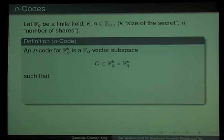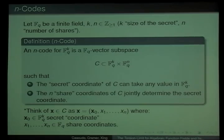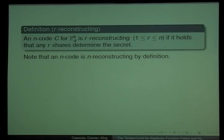k will be the size of the secret, n will be the number of shares. An n-code is a vector subspace of F_q^k times F_q^n that satisfies two properties. If we think about the codewords in C as having in the first k coordinates the secrets and in the last n the shares, then the property that we need is first that for any vector in F_q^k, this is a secret for some codeword. In other words, that we can secret share any vector in F_q^k. The other property that we need is that the set of all shares determine the secret.